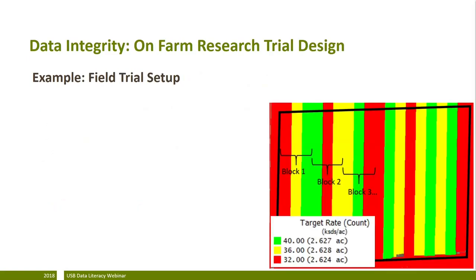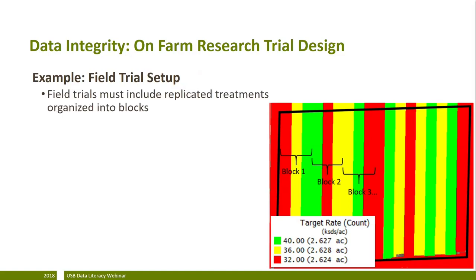Many growers also use on-farm research as a source of information — a great way to get information specific to your farm and growing environment. To get the most out of on-farm research efforts and have confidence in results, it's important to follow proper experimental design guidelines. In this example, the grower was evaluating planting population with three seeding treatments: 32,000, 36,000, and 40,000 seeds per acre. These treatments were arranged into blocks where each block contains each treatment, replicated six times across the field with randomized order within each block, helping reduce and account for the effects of field variability.